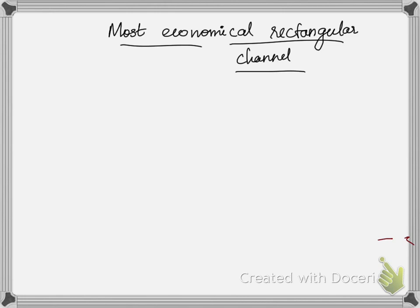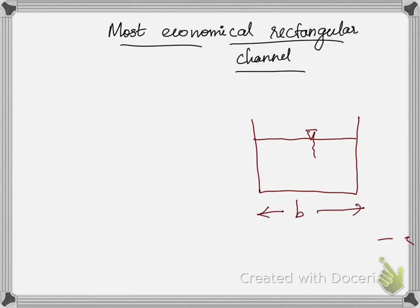If you want to keep the cost minimum, the wetted perimeter for the given discharge should be minimum. Now, what is wetted perimeter? If you take a rectangular channel with water flowing through it, the width of the channel is B and the depth of the channel is D. The wetted perimeter is B plus D plus D.